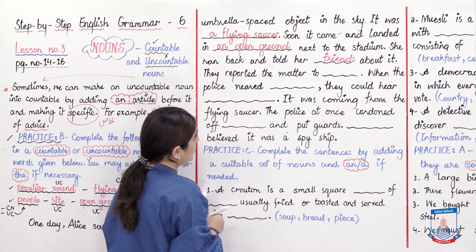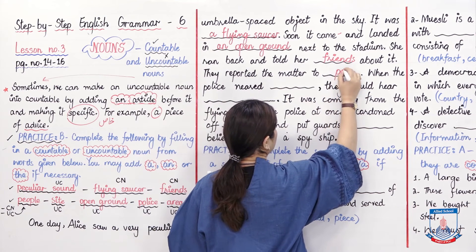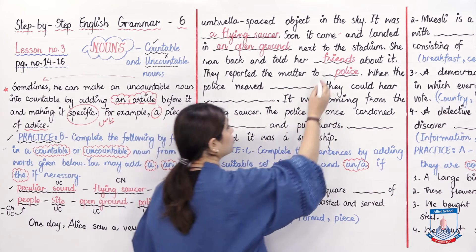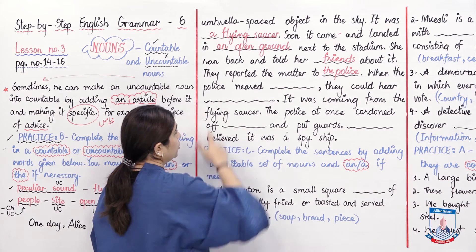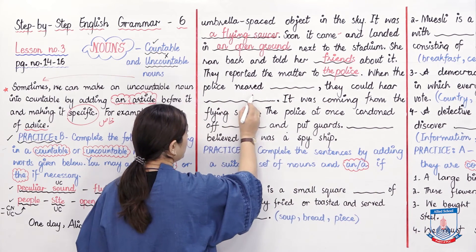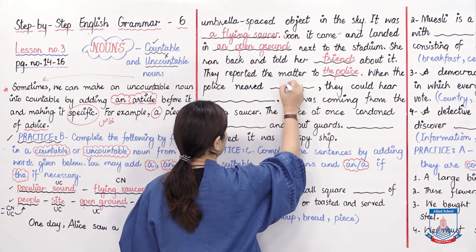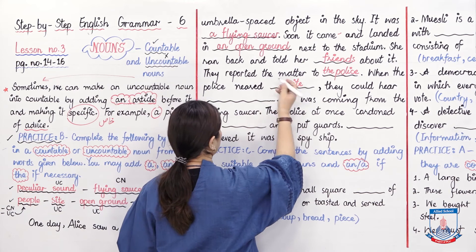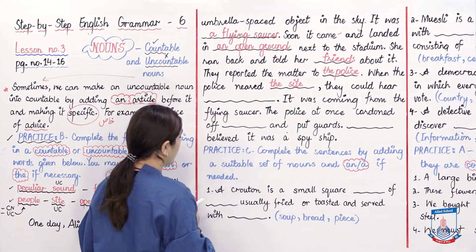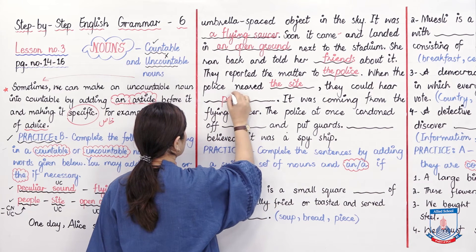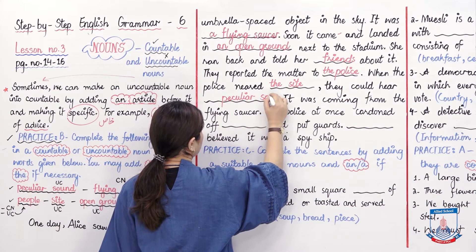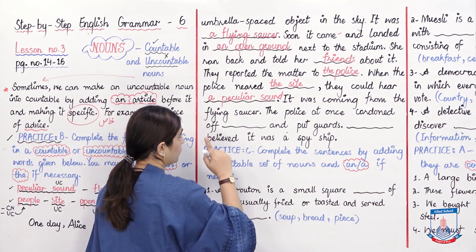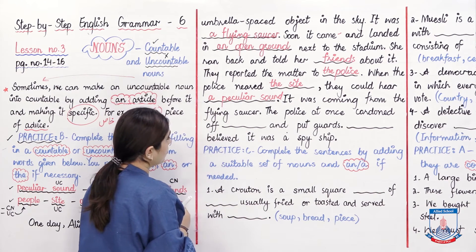'They reported the matter to' — 'police.' Since we are talking about the entire police force and making it specific, we add 'the': 'the police.' 'When the police neared the site' — site means the location where an event occurs. 'They could hear' — 'a peculiar sound.' Since one sound is being referred to, we write 'a peculiar sound,' quantifying it.